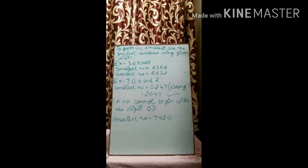To form the smallest and the greatest numbers using given digits. For example, four digits are given here. For writing smallest number, we always start from the smallest digit. We can see here 2 is the smallest digit, then 3, then 5, and then 8. So smallest number is 2358.